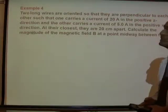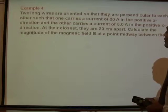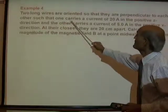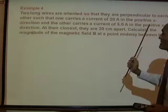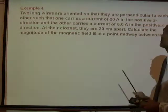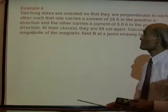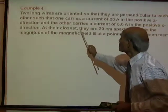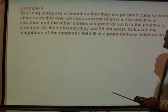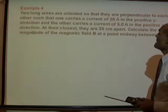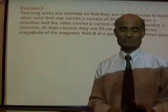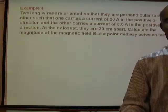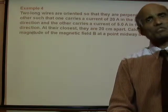Two long wires are oriented perpendicular to each other: one carries a current of 20 ampere in the positive z direction, and the other carries a current of 5 ampere in the positive x direction. At their closest they are 20 cm apart. Calculate the magnitude of the magnetic field B at the point midway between them.